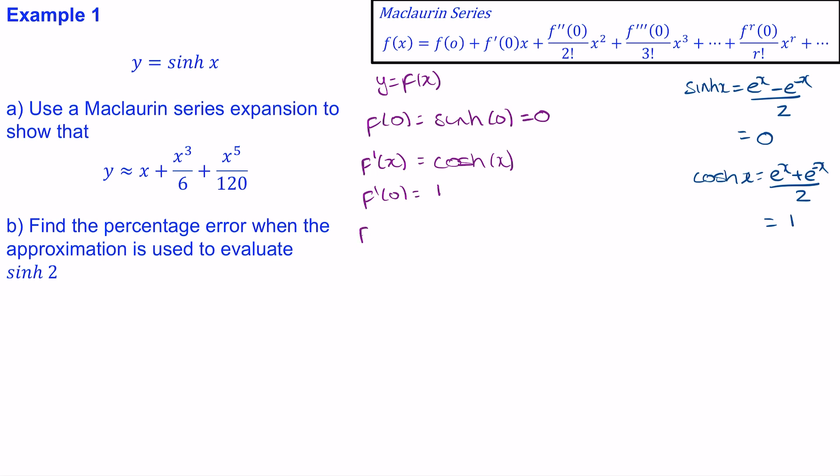So now we need to work out the second derivative. The derivative of cosh is sinh, so this will be sinh(x). And we know that when x equals 0 we get 0.